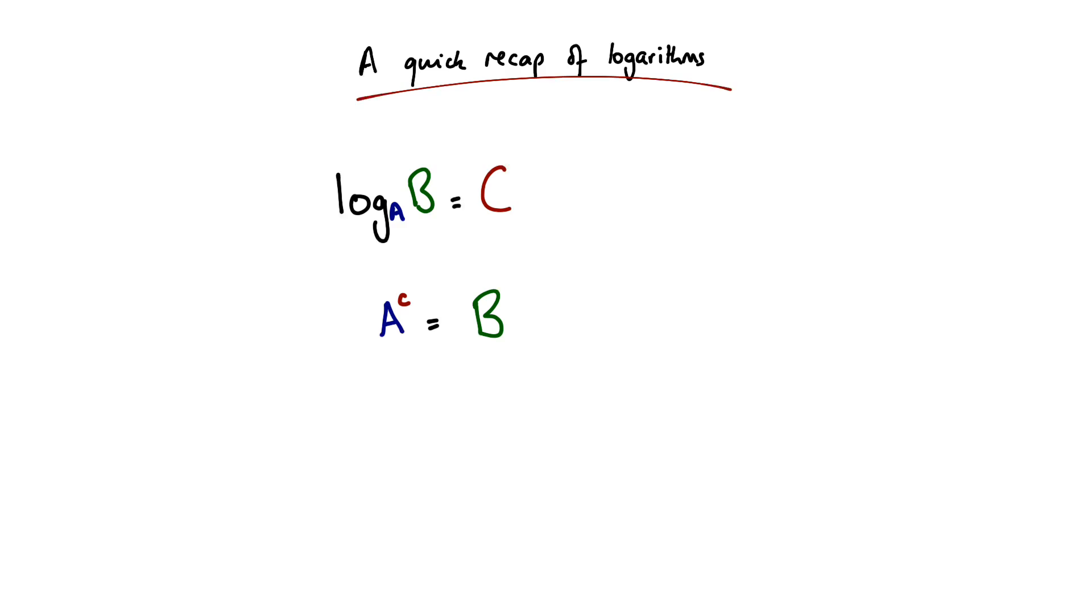And we can run through some specific numbers to make sure we've understood that. So let's look at log to the base 3 of 9. What will that be? Well, all we're saying is, to what power do we need to raise our base, which is 3, to achieve the number 9? Well, we need to square 3, so we need to raise it to the power 2. So log to the base 3 of 9 equals 2. And again, going back to our original generic example here, that's because 3, which is our base, to the power 2 equals 9.